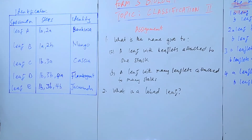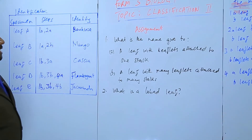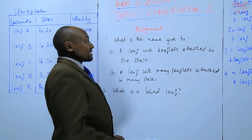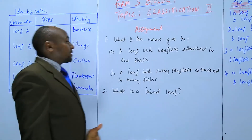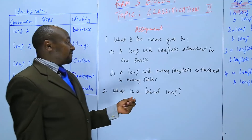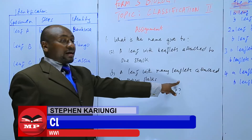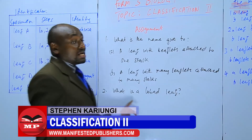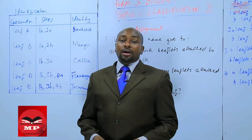Two questions for the assignment: first, what is the name given to a leaf with leaflets attached to one stalk? Second, what is the name for a leaf with many leaflets attached to many stalks? And finally, what is a lobed leaf? We will stop there until next time — goodbye.